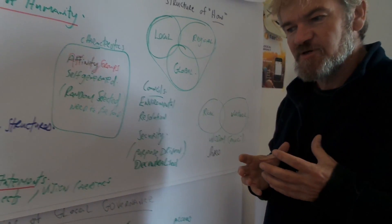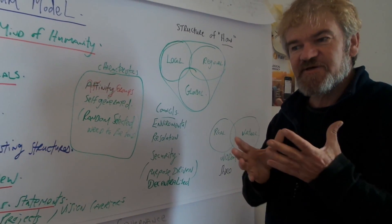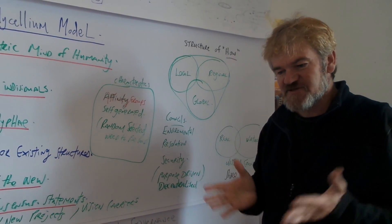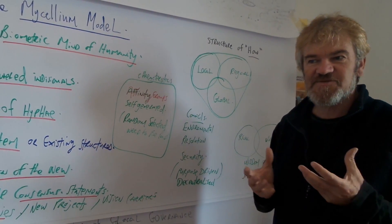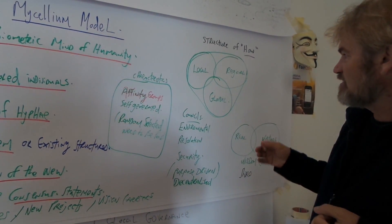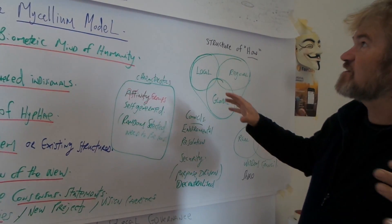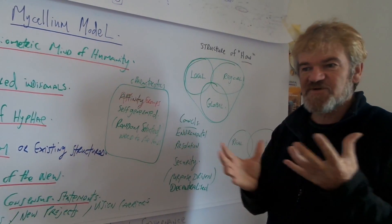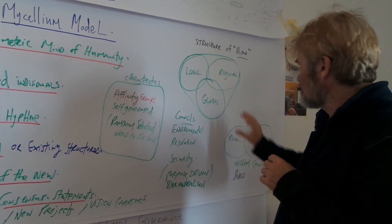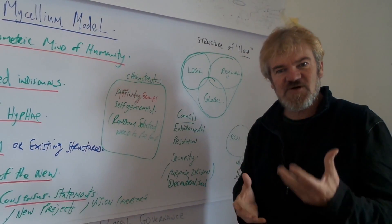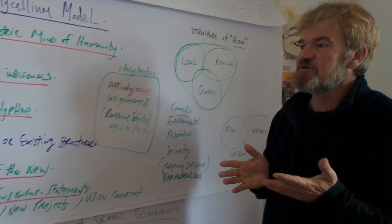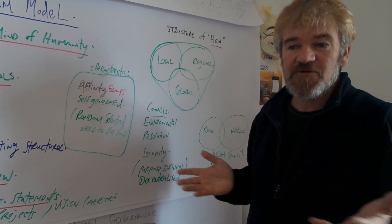People who feel that they have an affinity towards a certain challenge or problem come together and discuss how that problem can be solved. Then they are fed by the mycelium, the biometric mind of humanity, on a local level and an international level on how to solve the problem. This is our model for global governance.